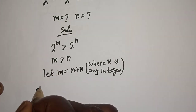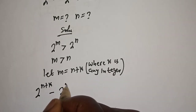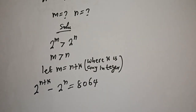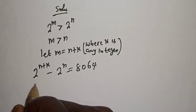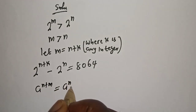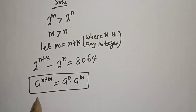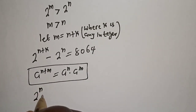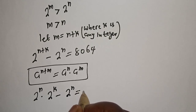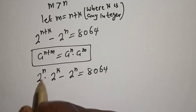Now, 2 raised to power (n plus k) minus 2 raised to power n is equal to 8064. Using the rule that a raised to power (n plus m) equals a raised to power n multiplied by a raised to power m, this becomes: 2 raised to power n multiplied by 2 raised to power k, minus 2 raised to power n, equals 8064.